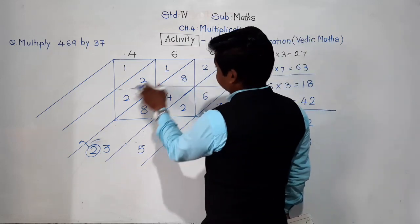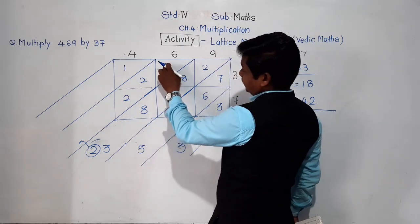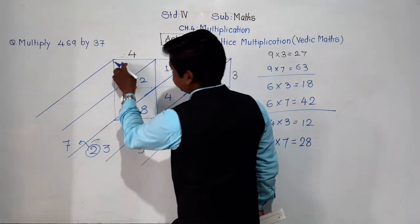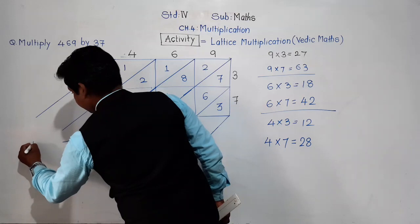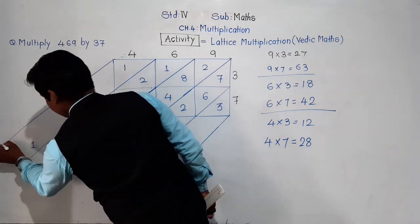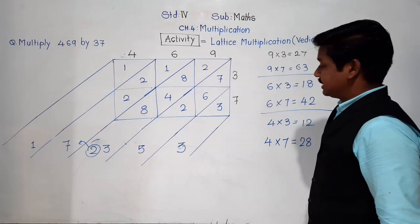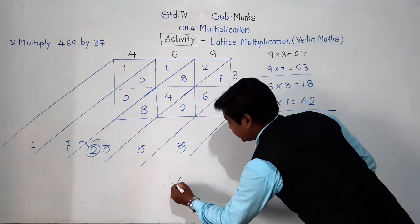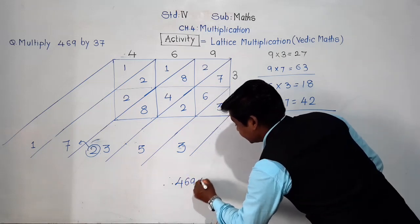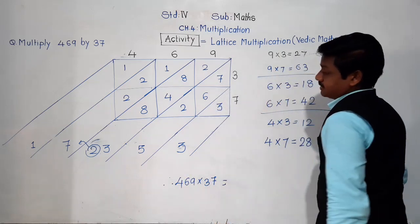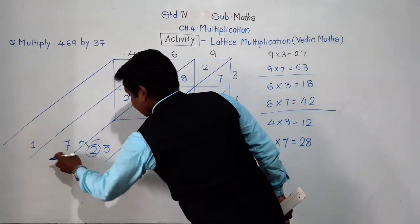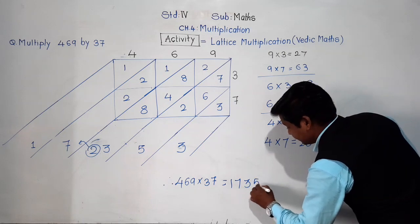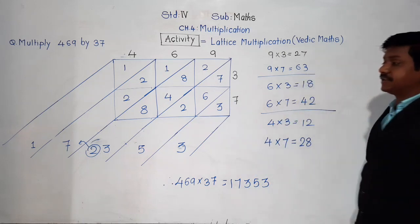Now the fourth strip: 2 + 2 = 4, plus 1 = 5, plus carry 2 = 7. And in the leftmost strip there is only 1. So the final answer is 469 × 37 = 17,353.